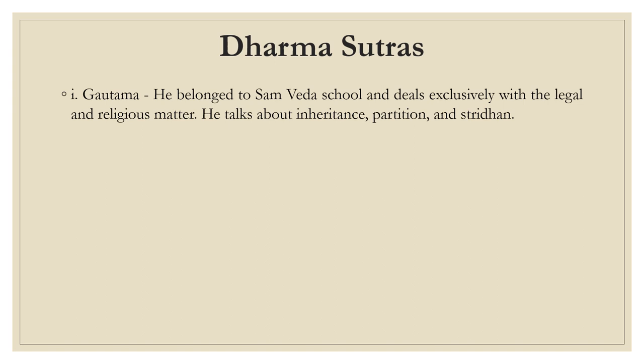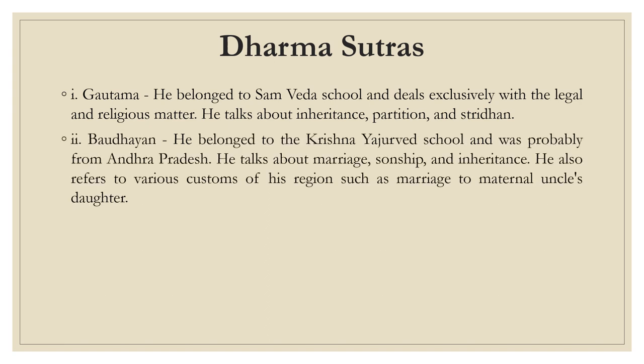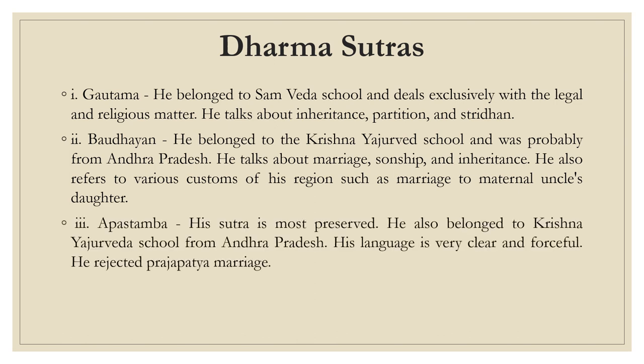Gautam talks about inheritance, partition and stridhana. The second is Buddhyan. He belongs to the Krishna Yajurved school and was probably from Andhra Pradesh. He talks about marriage, sonship and inheritance. He also refers to various customs of the region such as marriage to maternal uncle and uncle's daughter. Third is Apastham. His sutra is most preserved. He also belonged to Krishna Yajurved school from Andhra Pradesh. His language is very clear and forceful. He rejected Prajapatya marriage.